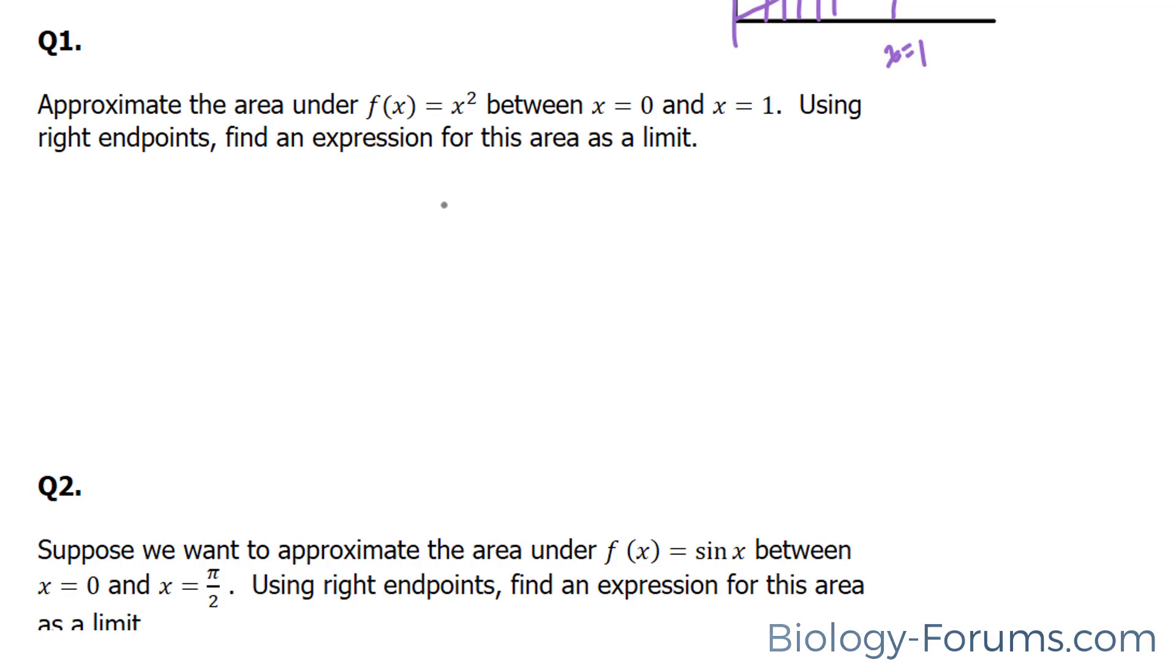First, we're going to find the change of x. And the change of x occurs from 1 and 0, so 1 minus 0 over n. The reason why we're not going to change this n into anything is because we don't know how many rectangles there are. We're taking it to the limit as n approaches infinity. So we're just going to leave it like that. It's 1 over n.